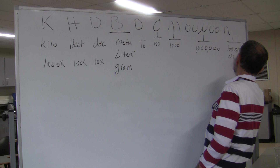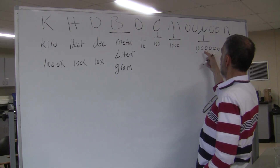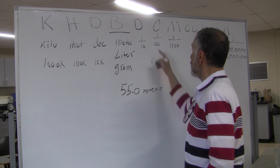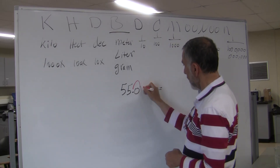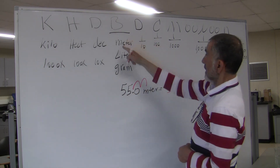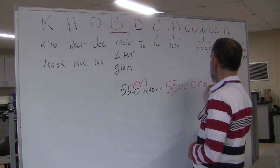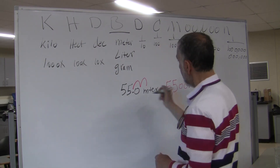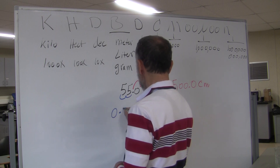Smaller prefixes are one over ten, one over one hundred, milli is one over one thousand, micro is one over one million, and nano is one over one billion. For example, 55.0 meters equals how many centimeters? You move the decimal twice to the right, giving you 5,500.0 centimeters. And 55 meters equals how many hectometers? Move the decimal twice to the left: 0.55 hectometers.